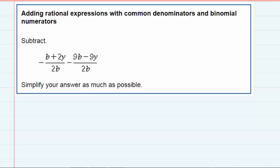Adding rational expressions with common denominators. We're asked to subtract these two expressions and we already have a common denominator of 2b, so we can keep that denominator with no changes needed.